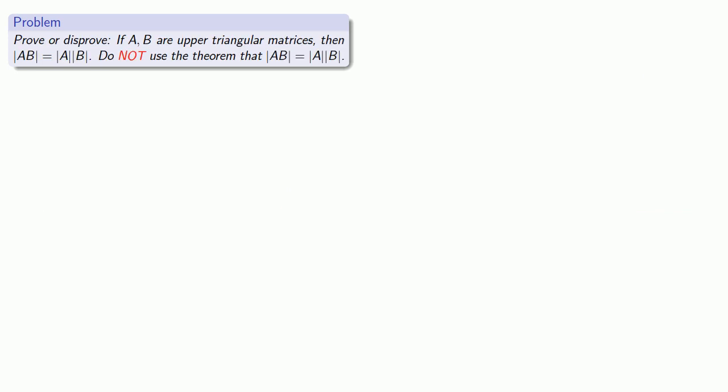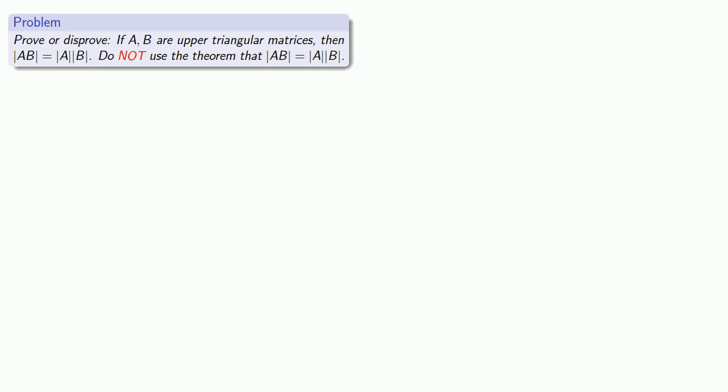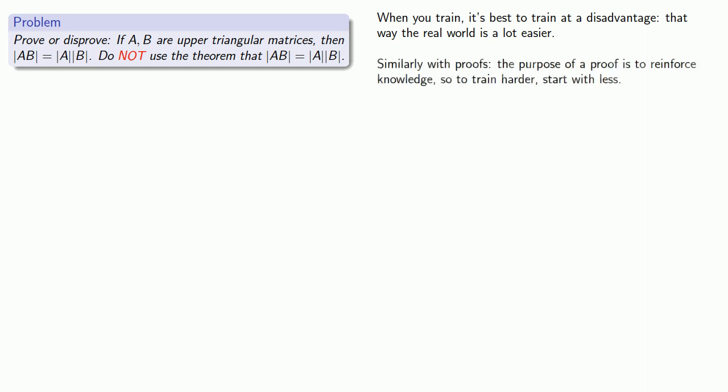What happens if we find the product of two triangular matrices? What is the determinant of that product? That's actually pretty easy — we have a theorem that says the determinant of a product equals the product of the determinants. But let's see if we can prove this result without using that theorem. You might consider this contrived, since we already have a theorem. But the answer comes from sports or any competitive activity such as military service: when you train, it's best to train at a disadvantage, so that the real situation is easier. We face a similar situation with proofs — the purpose of proof is to reinforce knowledge. To train harder, start with less.